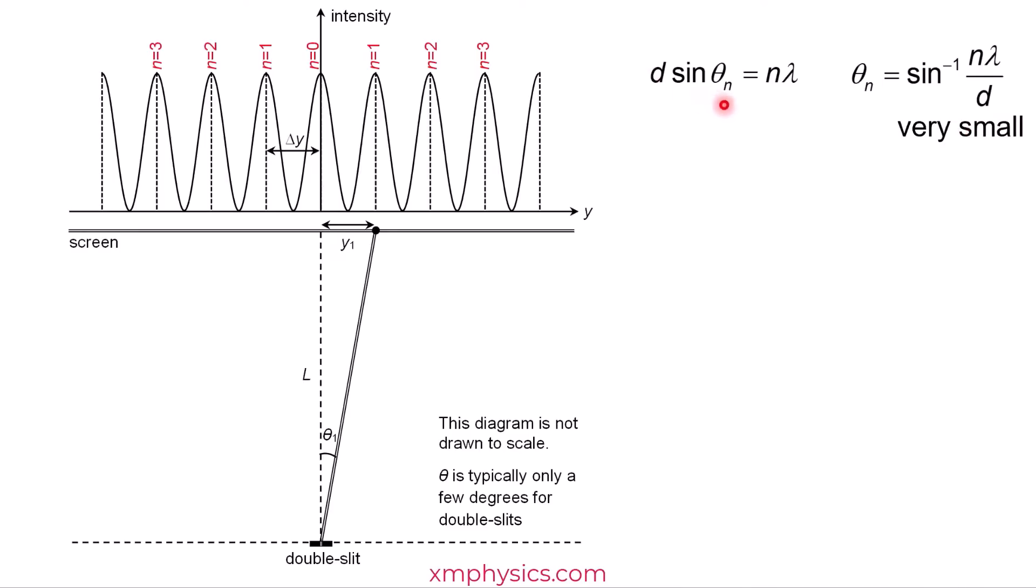So if theta is small, I can write sine theta as y divided by L. So y is the position along the screen where the bright fringes are formed. So sine theta is opposite over hypotenuse, right? So it should be y divided by the hypotenuse. But if theta is very, very small, then the hypotenuse and the screen distance are the same length, practically the same length. So instead of y divided by hypotenuse, I'll just write y divided by L. Get it? That's how I replace sine theta with y over L.